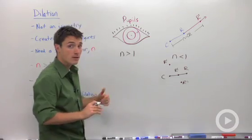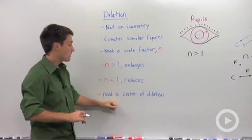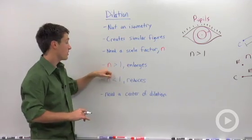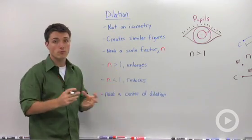So again, when you are dilating, you need to know your scale factor and a center of dilation. If your scale factor is larger than 1, it will grow larger. If it's less than 1, you will have a reduction.